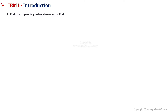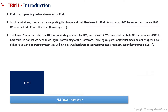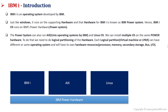IBM i is an operating system developed by IBM. Just like Windows, it runs on supporting hardware, and the hardware for IBM i is known as IBM Power System. The IBM i operating system runs on Power hardware. The Power hardware can also run AIX and Linux operating systems.